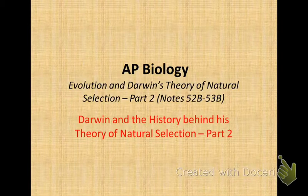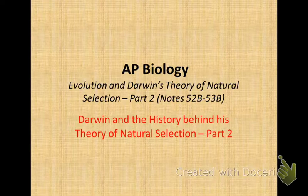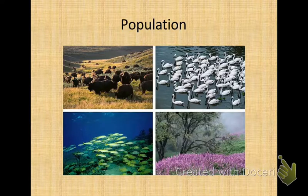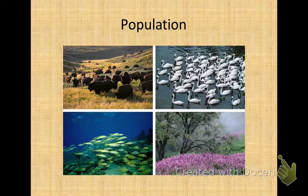This PowerPoint goes along with notes 52b and 53b, and this is part two of evolution and Darwin's theory of natural selection, going over the history of how he developed this theory. From the previous units, the definition of population is important to cover here to clear up some misconceptions. Populations are defined as groups of the same species that live in the same place at the same time and are able to reproduce.